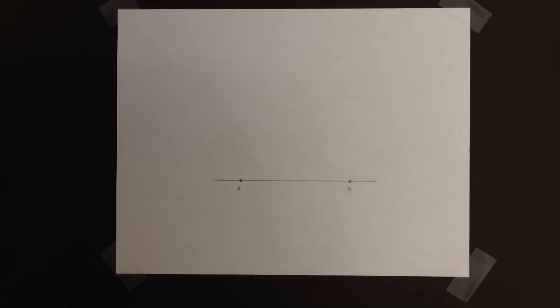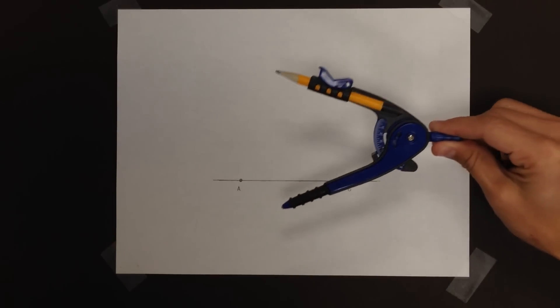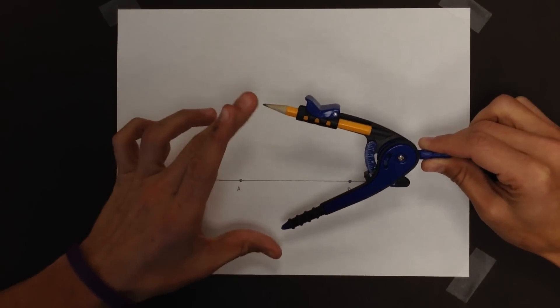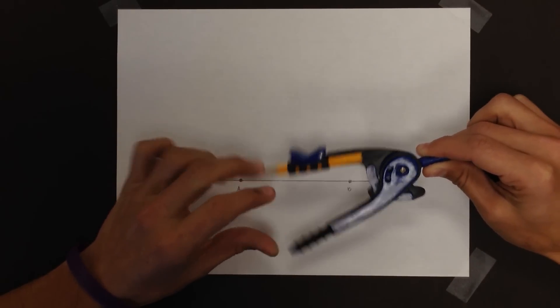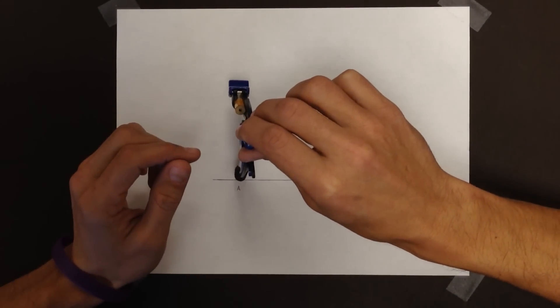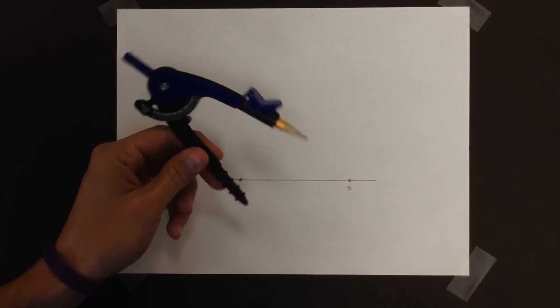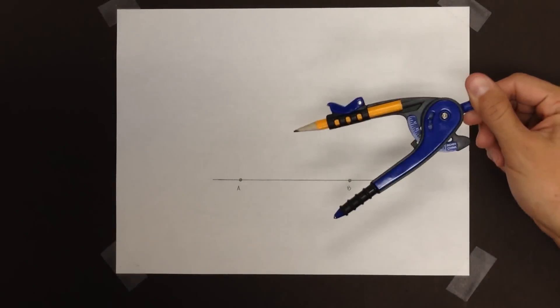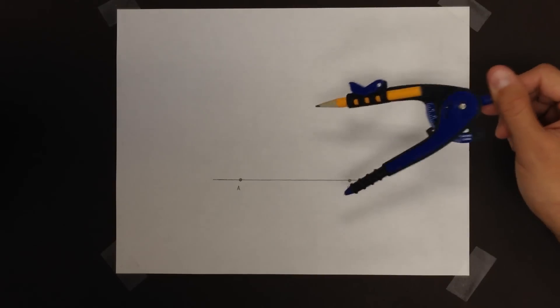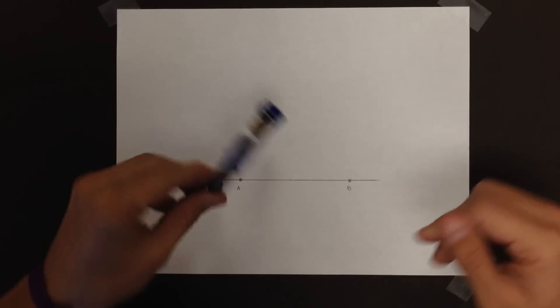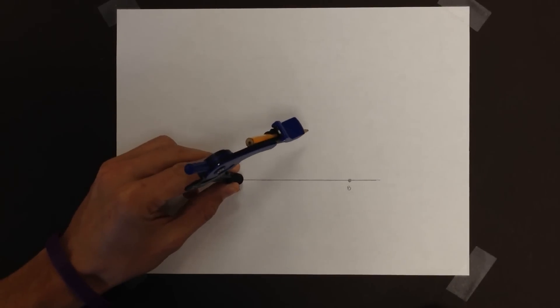Now the easiest thing to do is grab your compass, and you can pick a length that you want. All we're going to do is I'm going to establish some sort of a length. I'm going to say that's what my length is. And then I'm going to put the non-pointy part on A, and I'm just going to draw an arc.